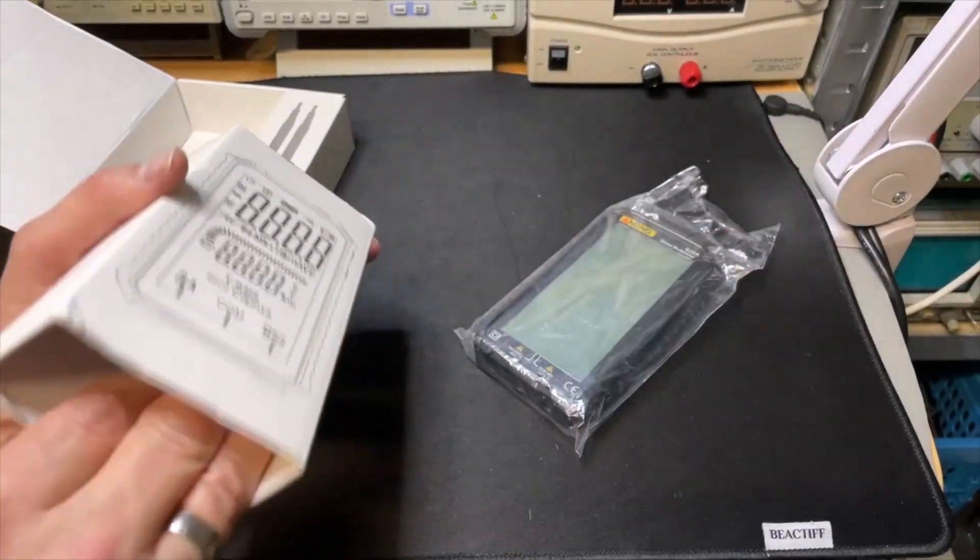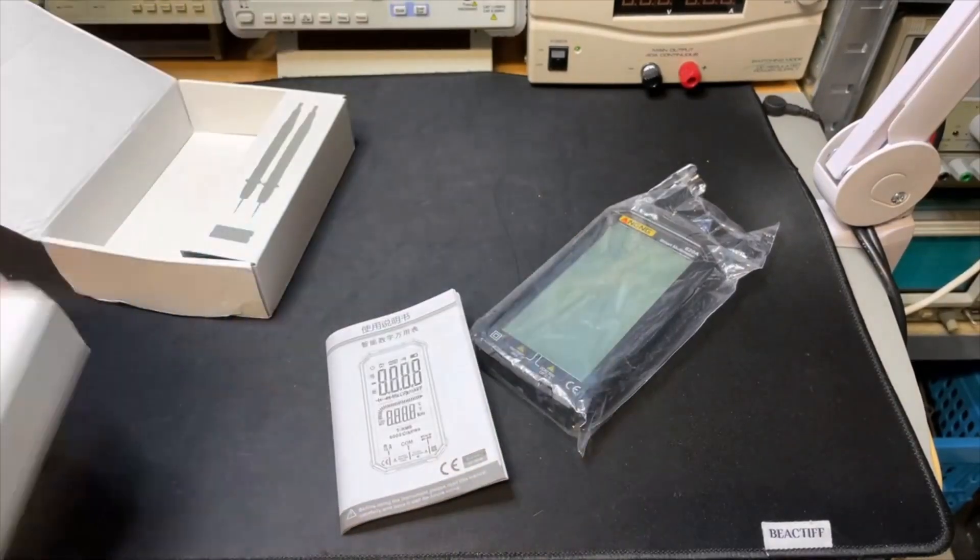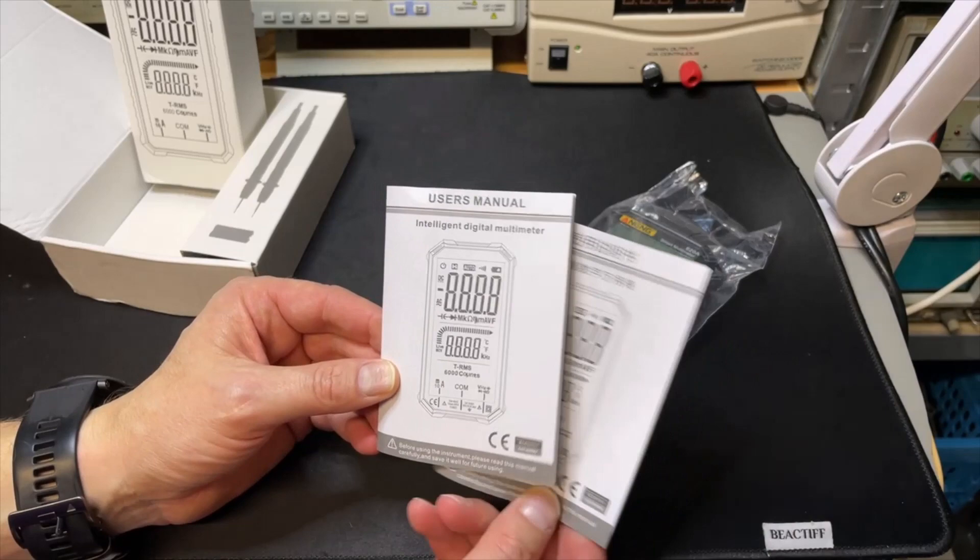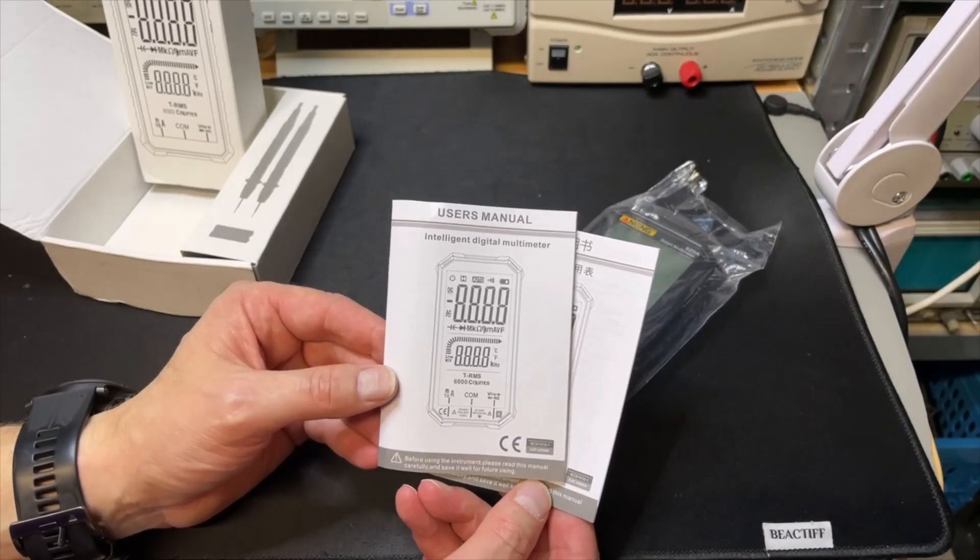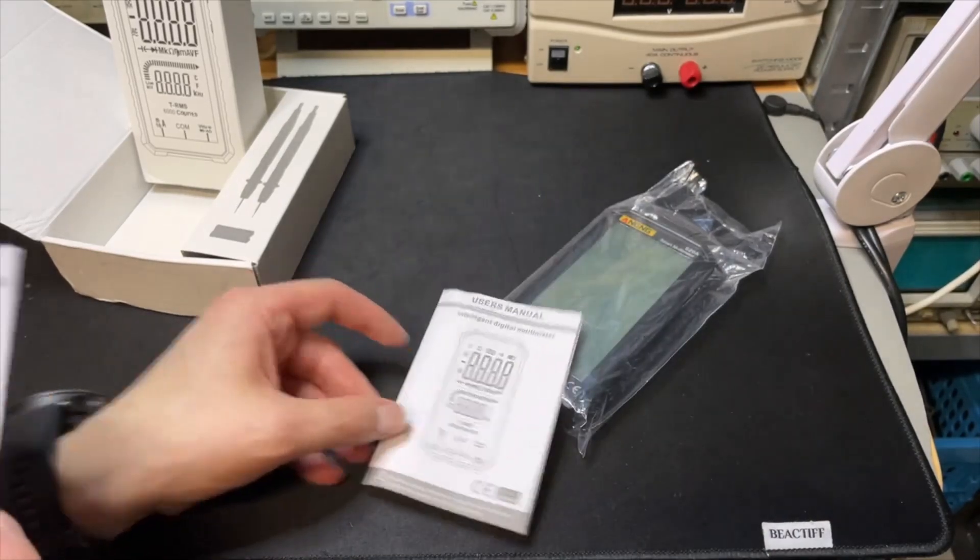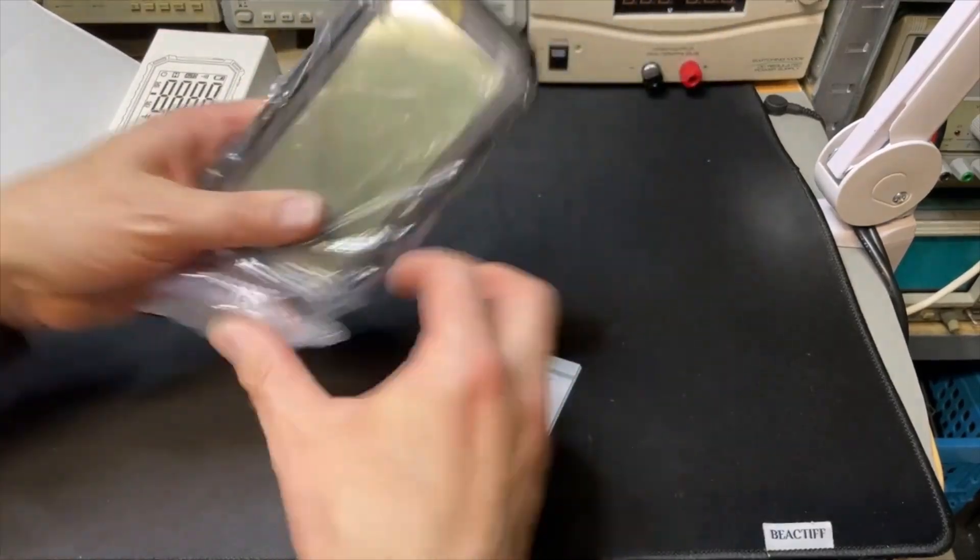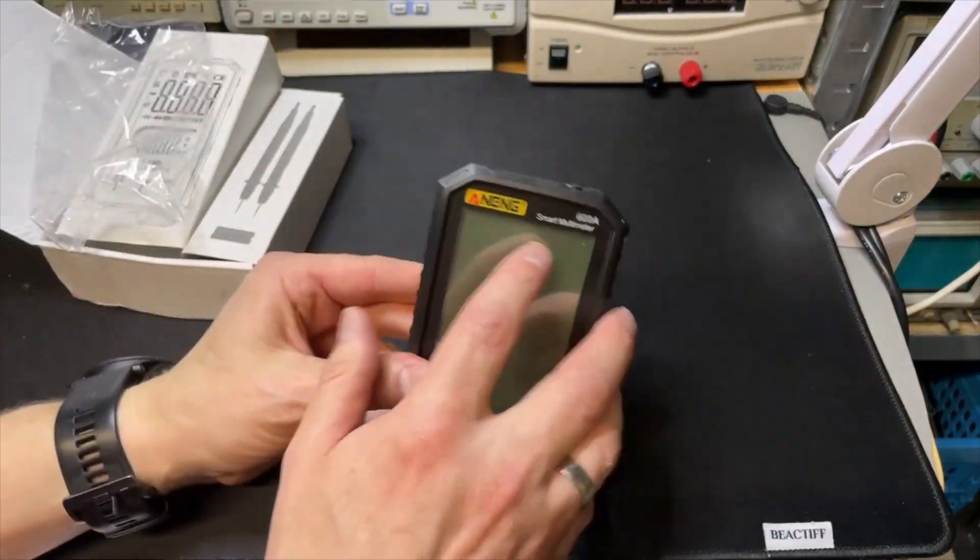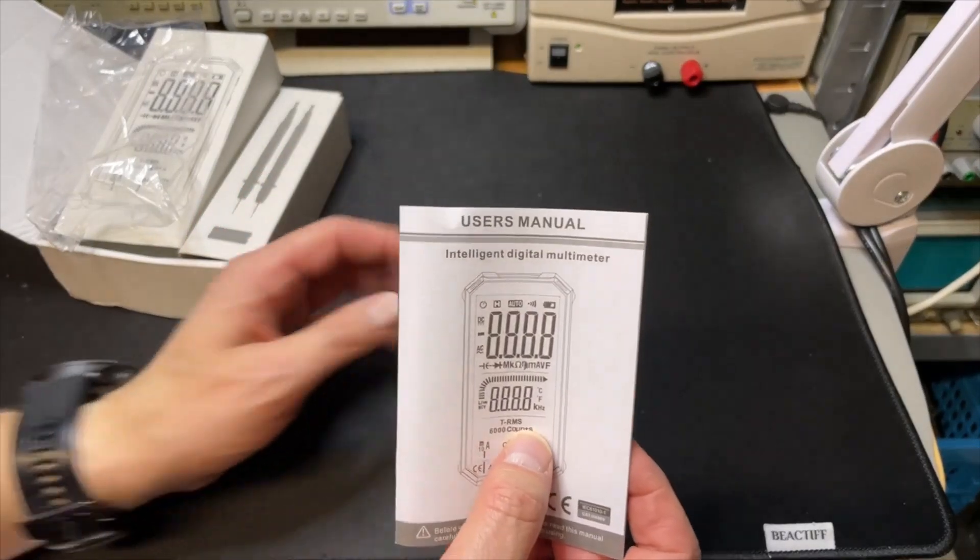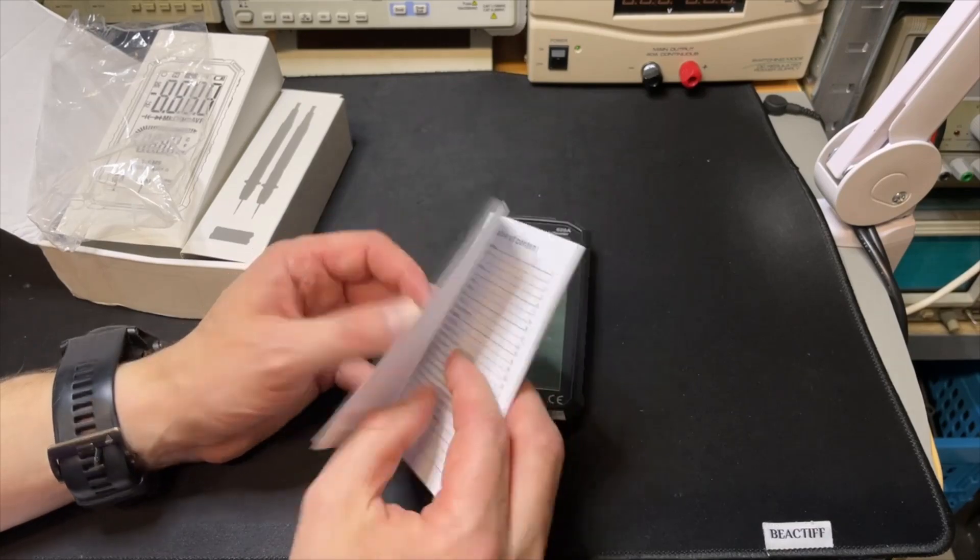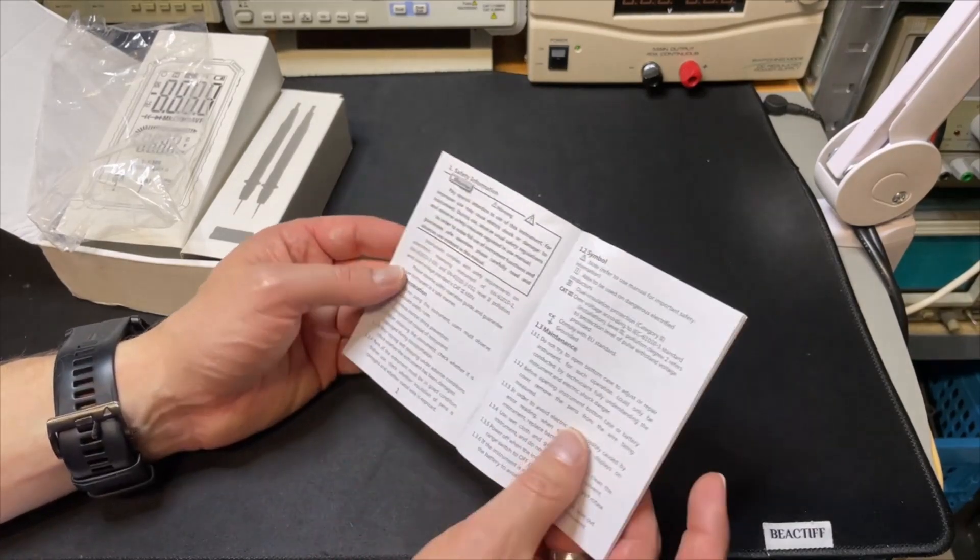It is full LCD, well protected. Two manuals, one in Chinese and one luckily in English. On the box and on the multimeter it says smart, and here it is intelligent, so that must be super smart and intelligent.